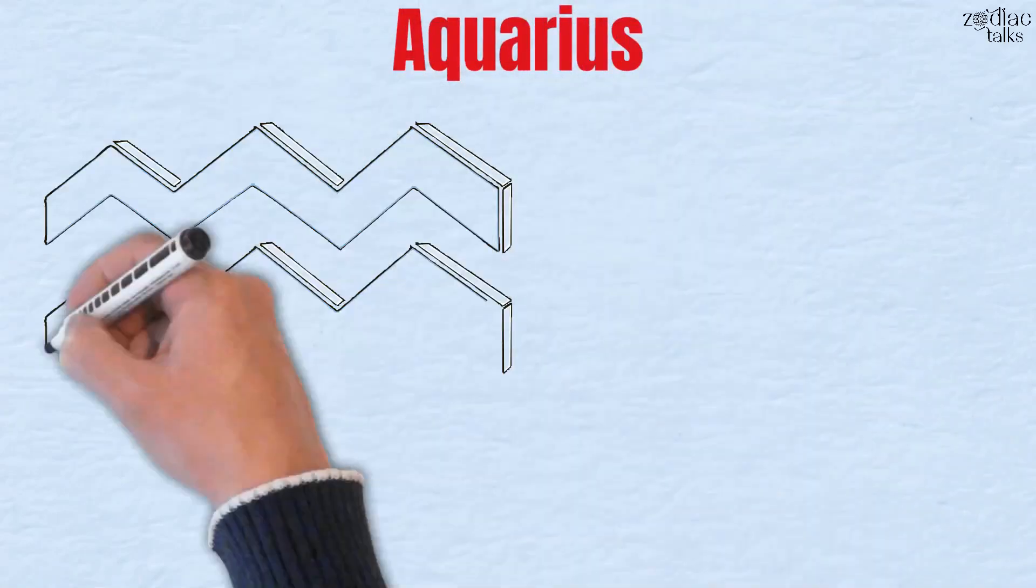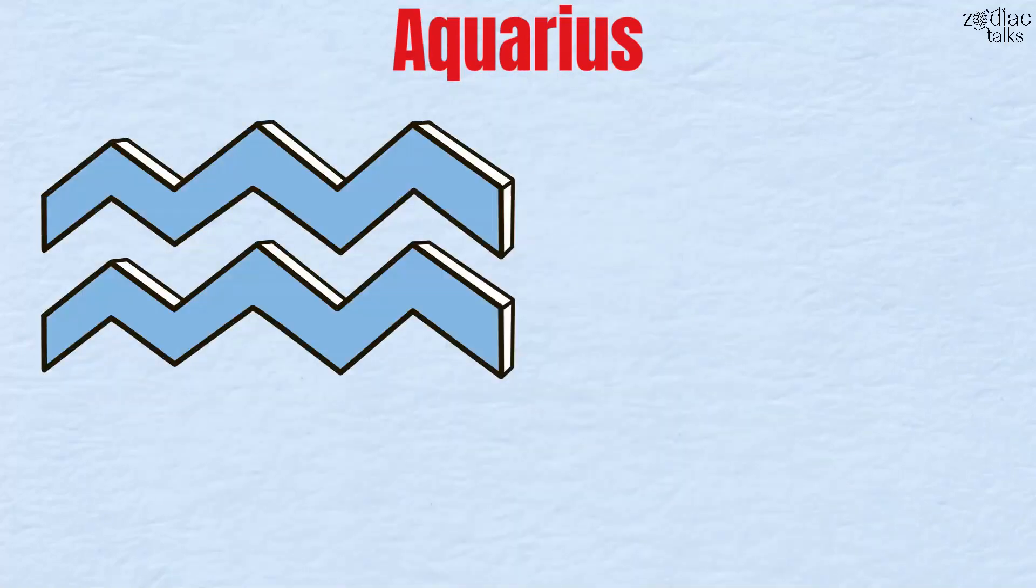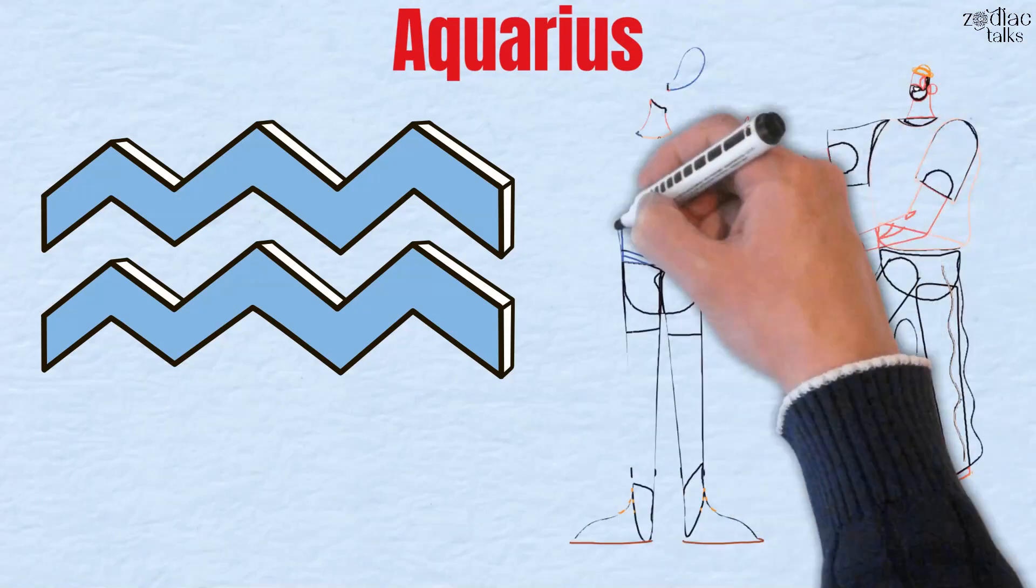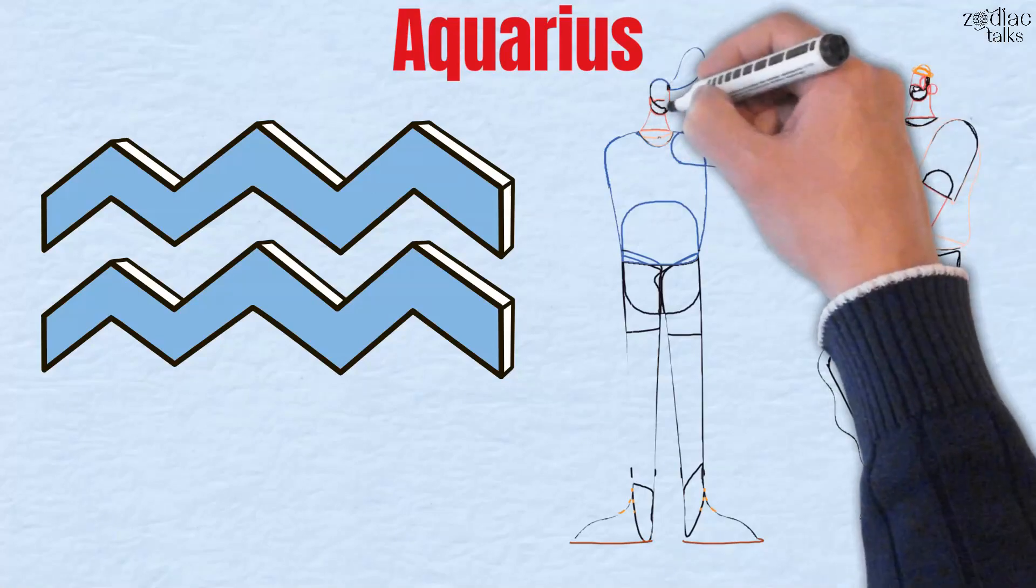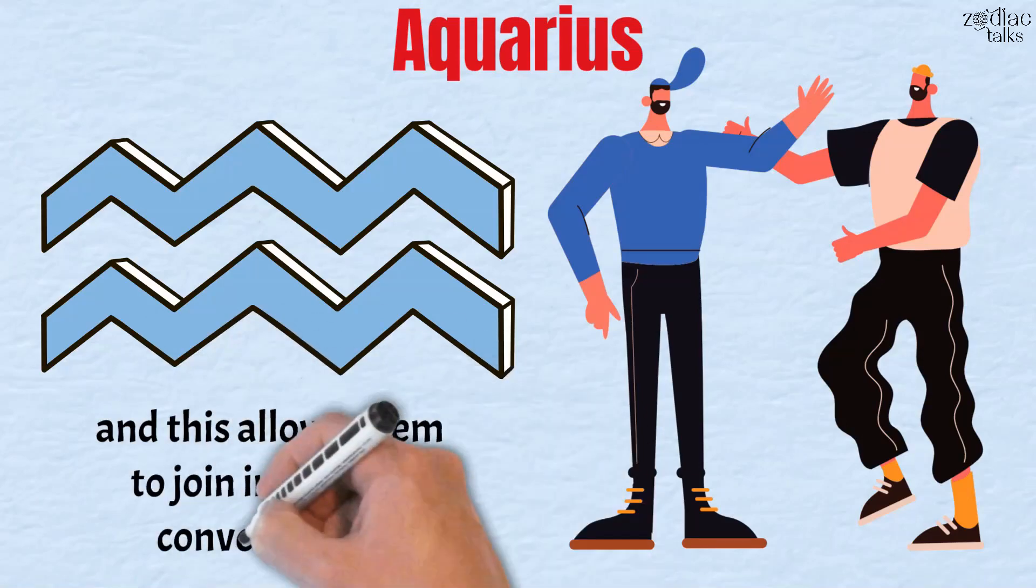Number four, Aquarius. If you're looking for the kings and queens of sarcasm, you need to befriend yourself an Aquarius native. These people tend to say things directly, but they always have some sarcastic thing to add to their way of speaking. Aquarius is one of the most intelligent signs of the zodiac, and this allows them to join into every conversation.